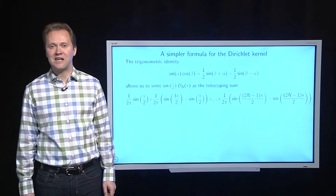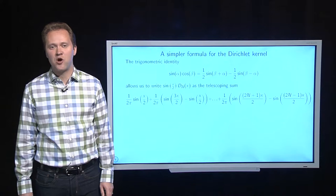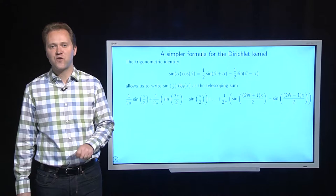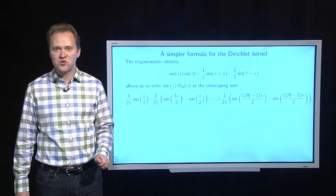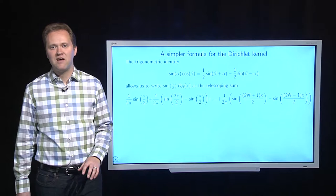But this is a telescoping sum. Note, the first term, the sine x over 2 appears in the first parenthesis, in the second term. We have a minus the same quantity. Ah, they cancel one another out. And if you keep on going like this down the sum, the sine over 3x over 2 cancels with a term from the third term in the sum and so forth. The only term that survives is the term sine with a 2n plus 1 times x,